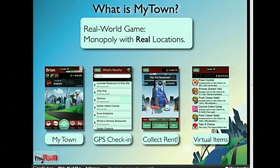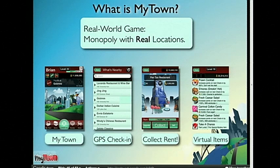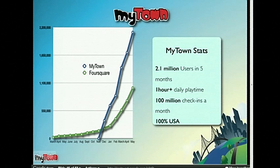The concept and flow: you start with the homepage, you can check out your town, hit the check-in button which uses the user's location — that's where we interface with the Places services API — then interact with different properties. Some quick stats: we've been out about five months with MyTown, over 2.1 million users now around 2.25 million. Engagement is super high — people are playing over an hour a day on average. About a hundred million check-ins a month, and a hundred percent of our user base is in the USA.